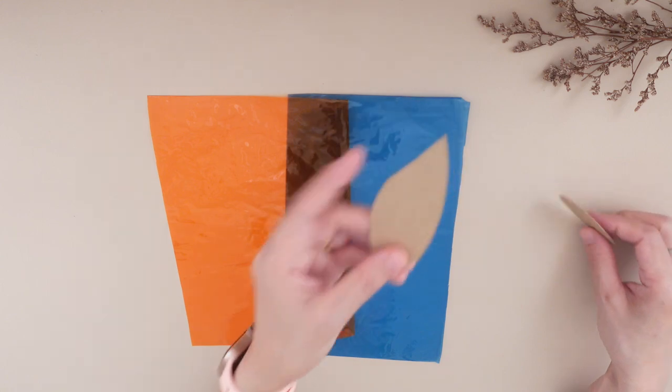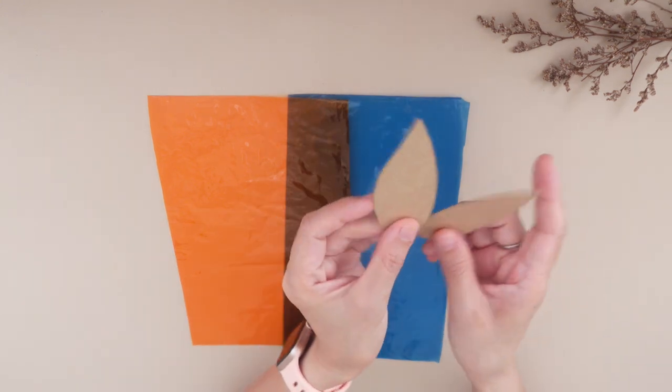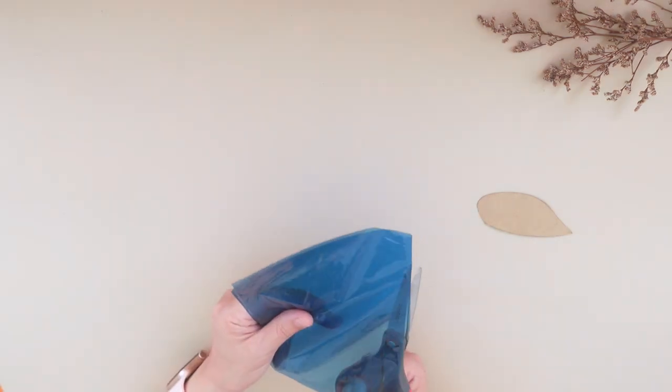Take the glass paper and the two teardrop cutouts. Cut around the shape leaving at least half an inch extra around it.